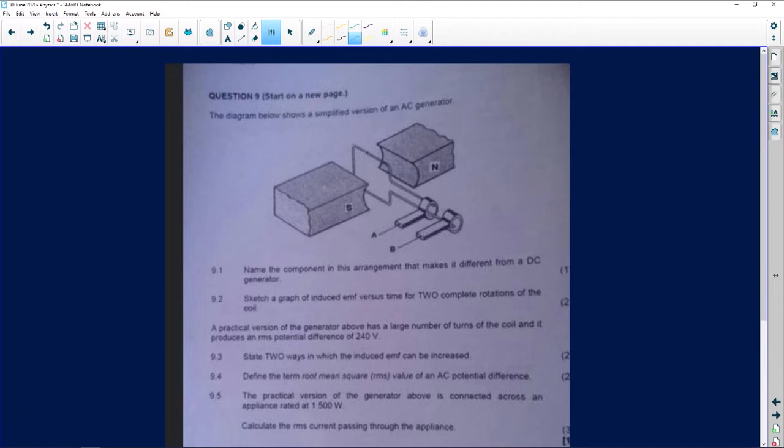So we have a diagram below that shows a simplified version of an AC generator. AC means alternating current. It's got split rings and not slip rings like a DC generator. When we talk about a generator, the energy conversion is mechanical to electrical. You must first work hard before you can have the benefits of having electricity.